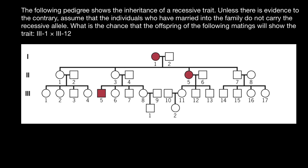Hello, and welcome to Nikolai's Genetics Lessons. Today's problem is: the following pedigree shows the inheritance of a recessive trait. Unless there is evidence to the contrary, assume that the individuals who have married into the family do not carry the recessive allele. What are the chances that the offspring of the mating between individual III-1 and III-12 will show the trait?